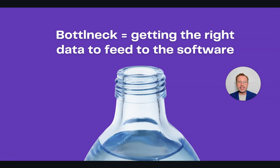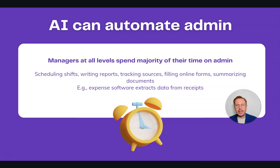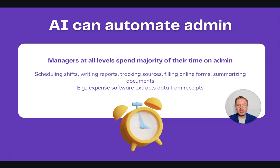One of the biggest bottlenecks with AI is getting the right data to feed the software. That's one of the biggest limitations of smaller businesses — they just don't have enough data. AI automating admin is one of the primary benefits. It increases productivity and morale because managers at all levels spend over 50% of their time on admin: scheduling shifts, writing reports, tracking sources, filling out forms, summarizing documents. For example, expense software that uses AI to extract data from receipts so you don't have to tediously fill them in manually — you just get it scanned by the AI.